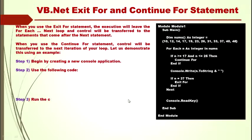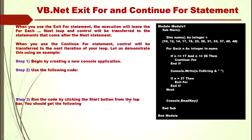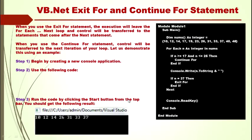Step 3: Run the code by clicking the Start button from the top bar. You should get the following result: 12, 14, 26, 31, 33, 37. This is the output of the code. Now let me explain each and every line of the code on the next slide.